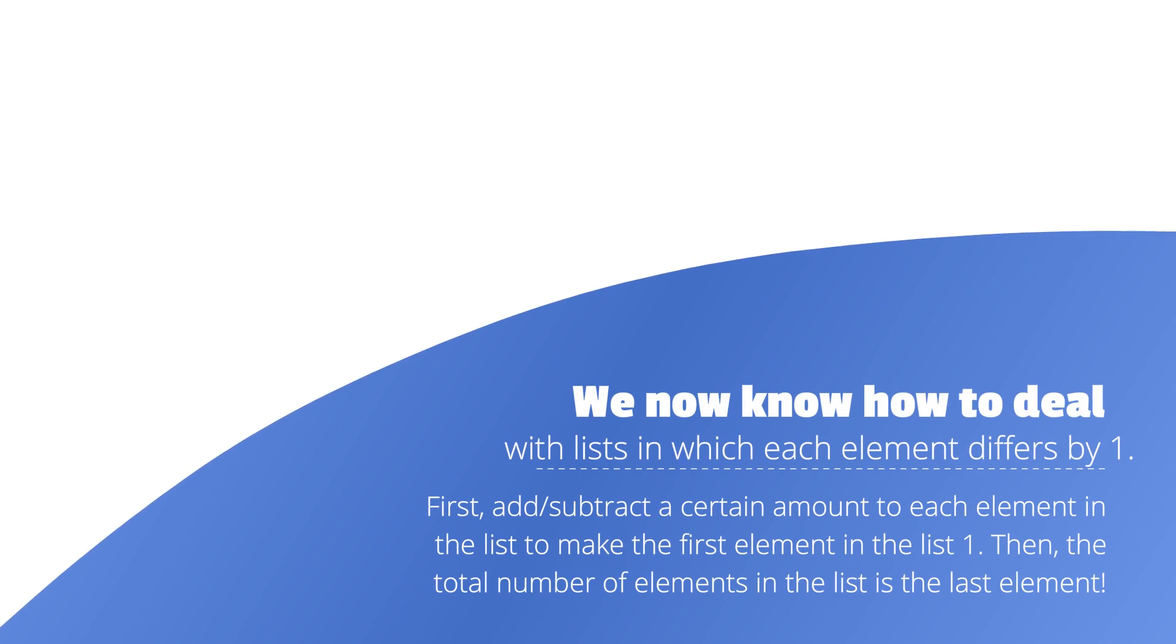We now know how to deal with lists in which each element differs by exactly 1. First, add or subtract a certain amount to each element in the list to make the first element in the list 1. Then, the total number of elements in the list is just the last term of the series.